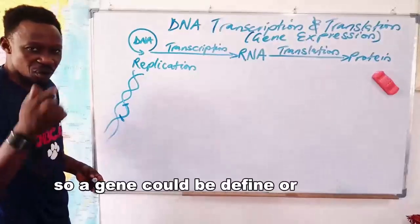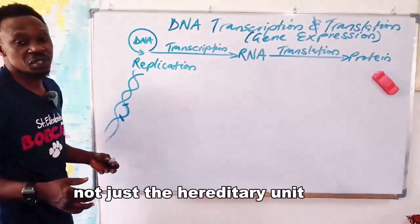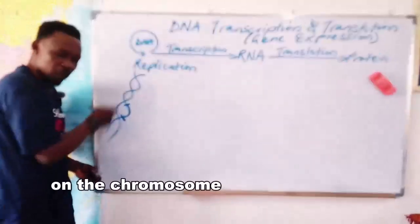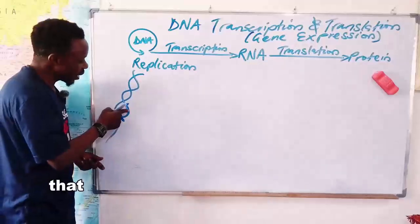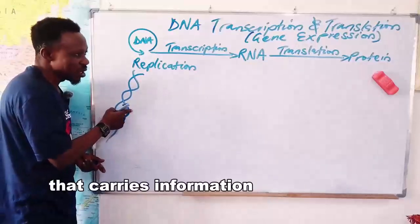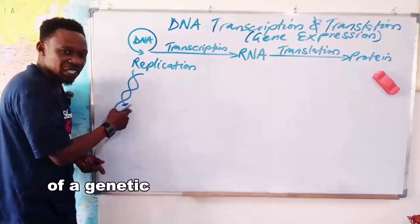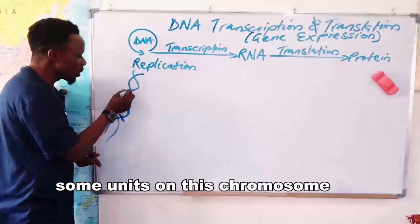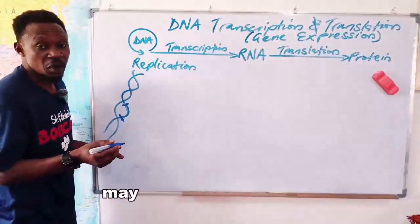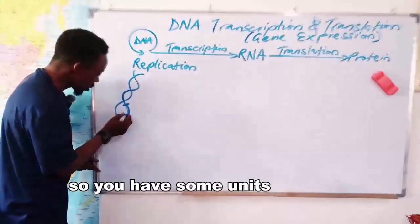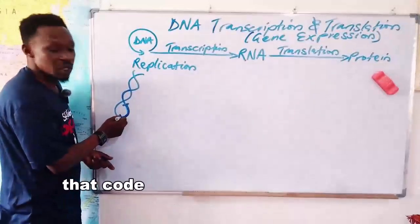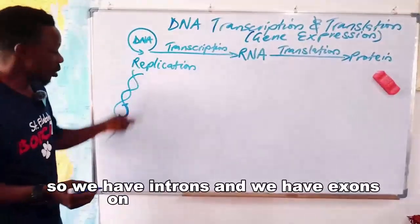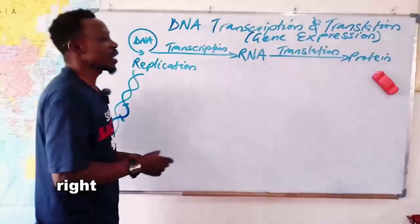So a gene could be redefined not just as a hereditary unit of life, but as any region on the chromosome that carries information for the coding of a genetic product or a protein. Some regions on the chromosome may not code for a protein. So you have some regions that code and some regions that do not code — we call these exons and introns on the chromosome.